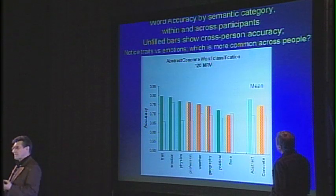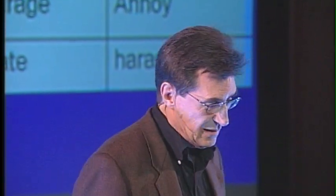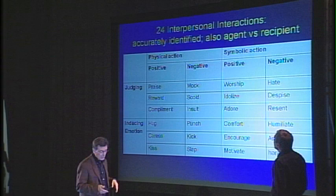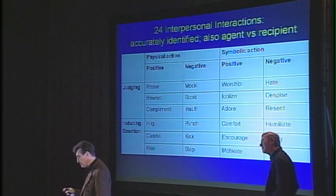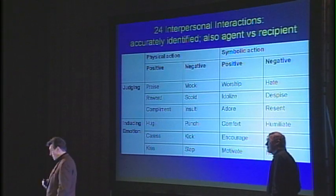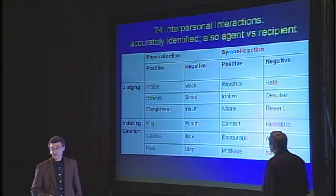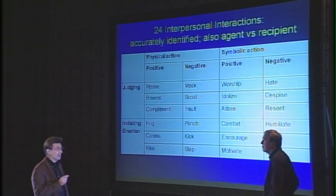With this technique we can see the degree to which ideas are shared among us. We've looked at social interactions — 24 social interactions depicted here: worship, idolize, hug, caress, reward, compliment. We ask people to think about what each of these means to them, and we can identify with approximately 80% accuracy which one of these 24 they're thinking about. And it's different when they're thinking about being the agent of this action versus the recipient — very different when you think about insulting someone versus receiving an insult. And we can nail that.